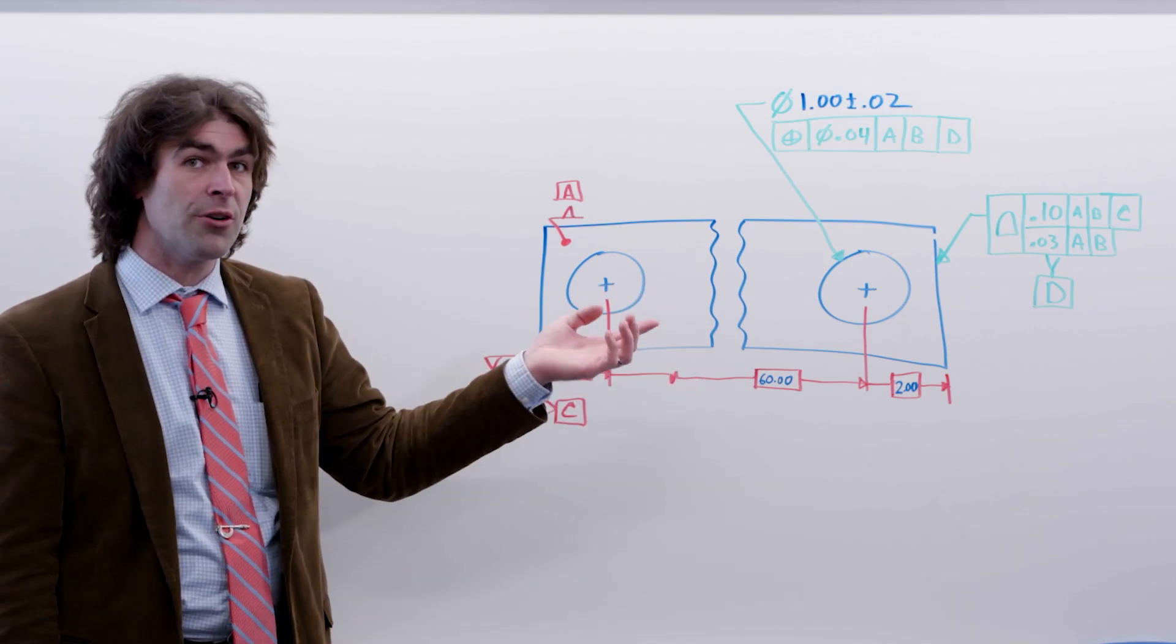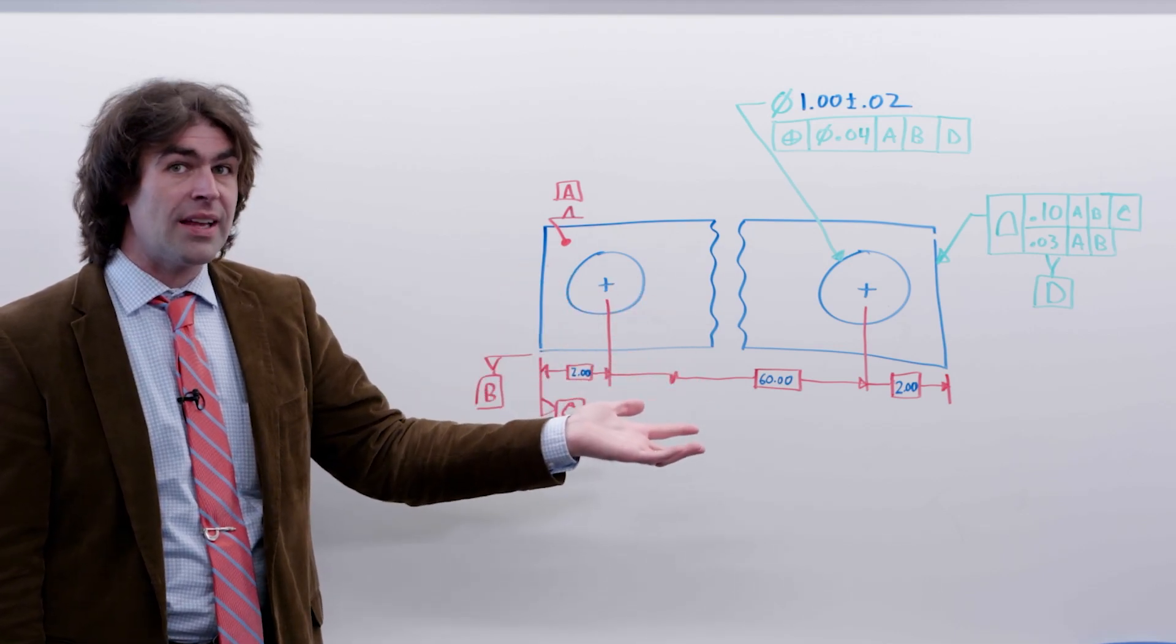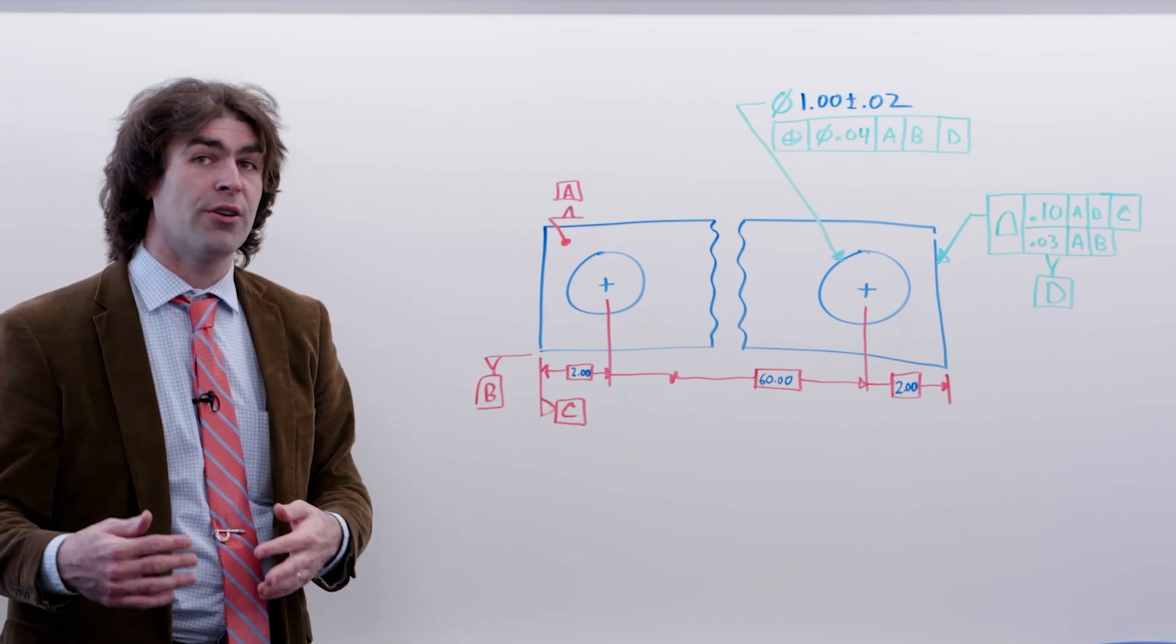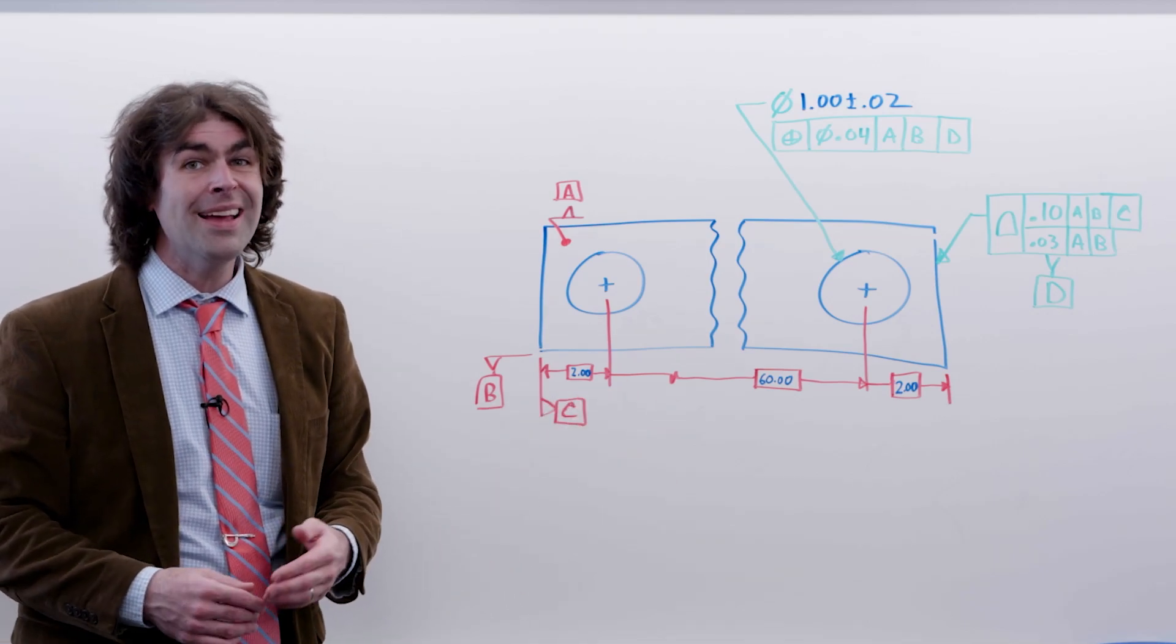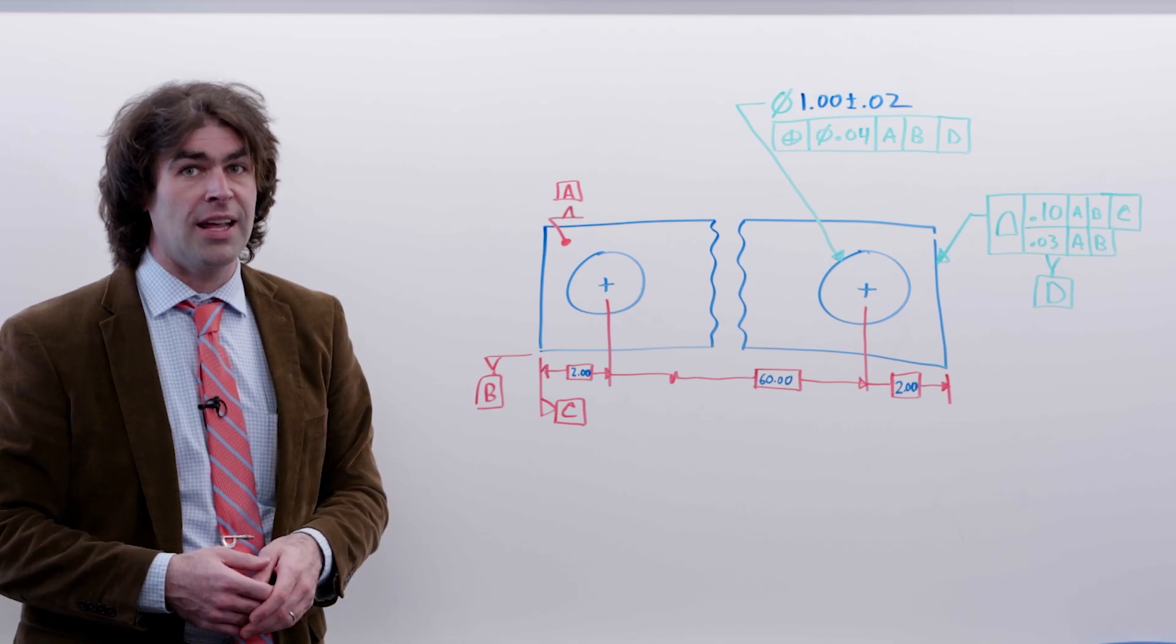100 thousandths, if you're anywhere in the middle of that tolerance zone, a tape measure is good enough. Now, if you're at the edge of the tolerance zone, you would need some more accurate instrument.